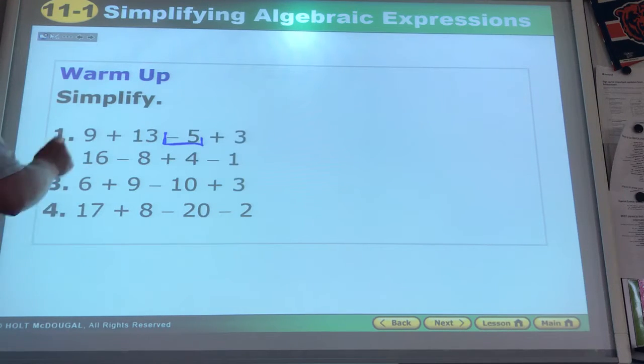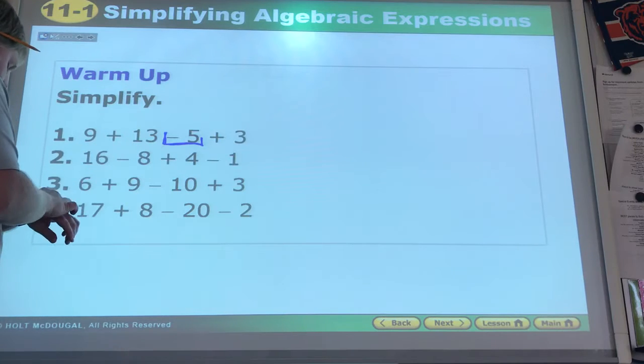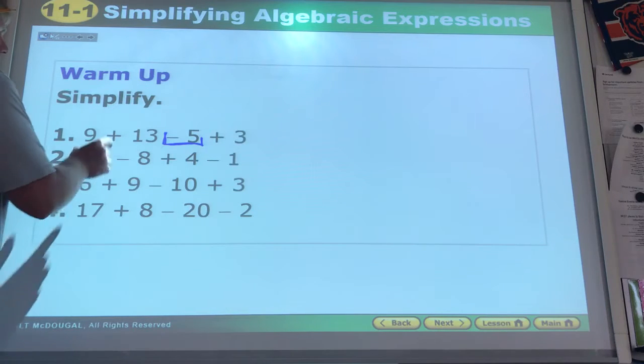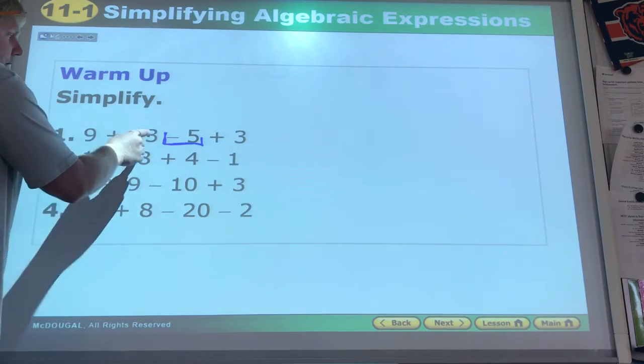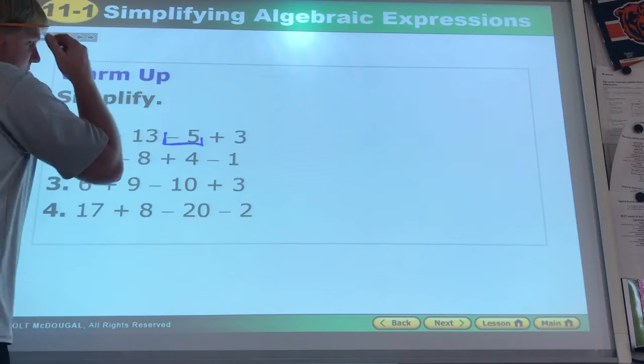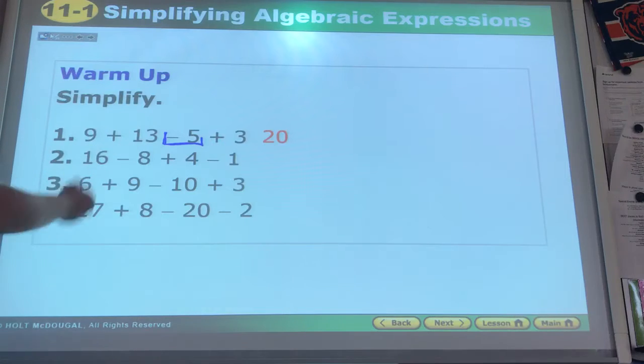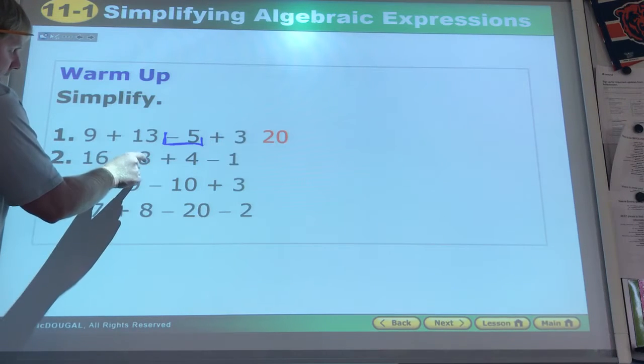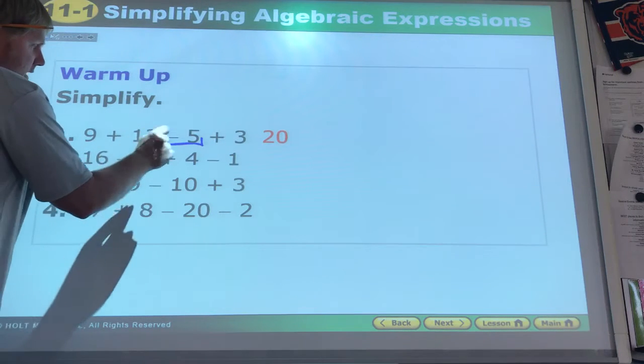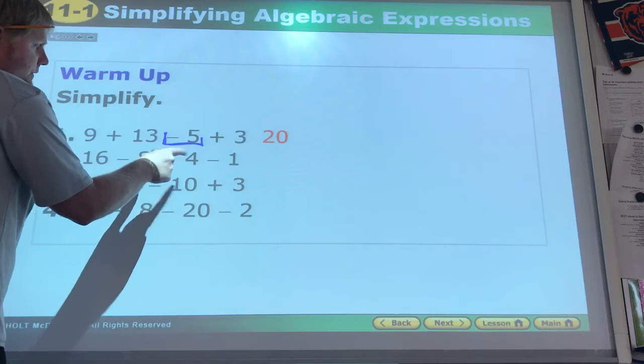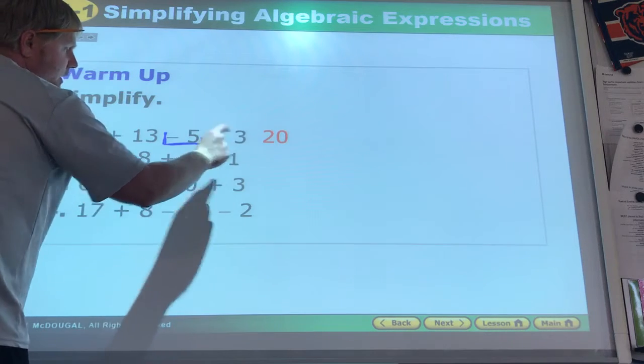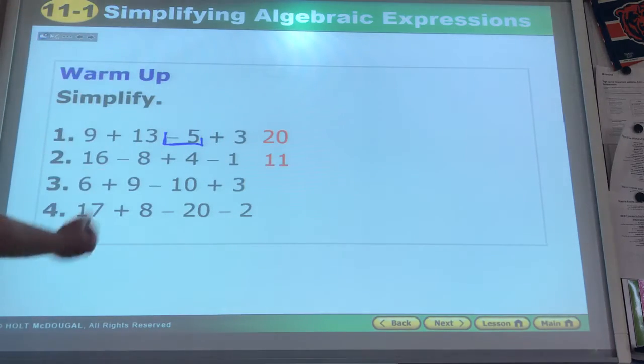So when we look at these, 9 plus 13 makes 22. 22 plus negative 5 makes 17. 17 plus 3 makes 20. 16 and negative 8 make 8. 8 and 4 make 12. 12 and negative 1 make 11. We get our answer.